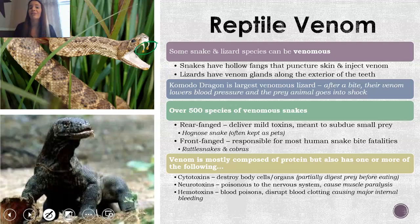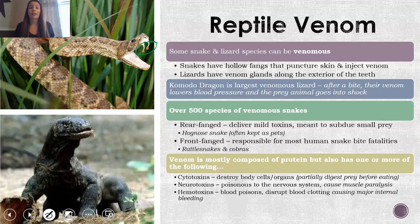The venom can also have one or more of the following toxins: a cytotoxin is meant to kind of liquefy the insides before swallowing, making digestion a little easier. A neurotoxin — think neuro, your nervous system — causes paralysis and can also cause the stopping of involuntary body functions. And then hemotoxins — think hemoglobin, relating to blood — so this is a blood poison that disrupts blood clotting, which causes internal bleeding.